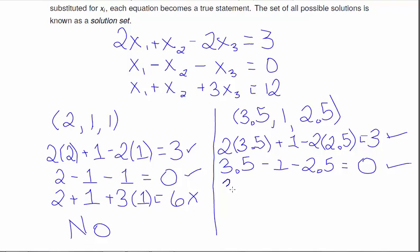What about the third equation? Well, X1 is 3.5, plus X2 is 1, plus 3 times X3, which is 2.5. 3.5 plus 1 is 4.5, and then 3 times 2.5 is 7.5. So 4.5 plus 7.5 is 12. So this one is a solution. Is it the only possible solution?